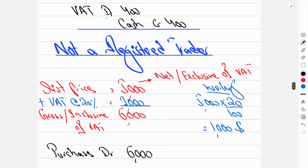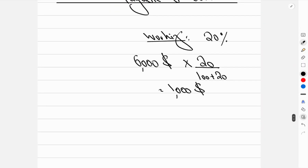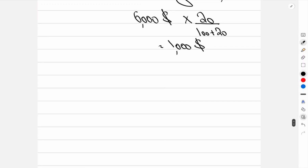If you are not a VAT registered trader and you sell goods to customers, you cannot charge VAT from them. Customers can ask to see your VAT registration number on the invoice; if you don't have one, you cannot collect VAT.